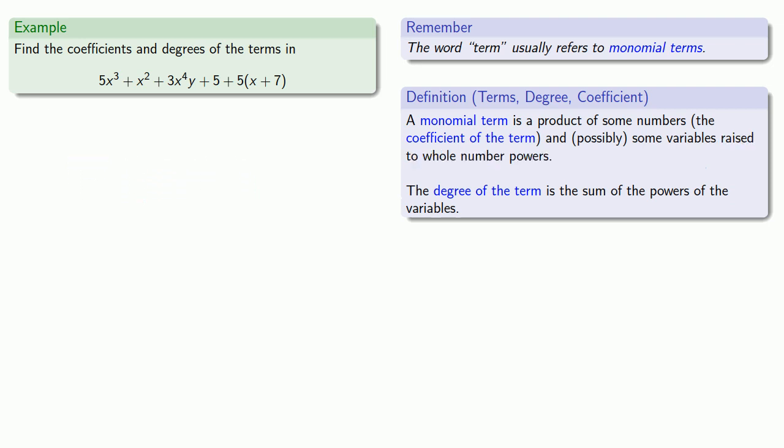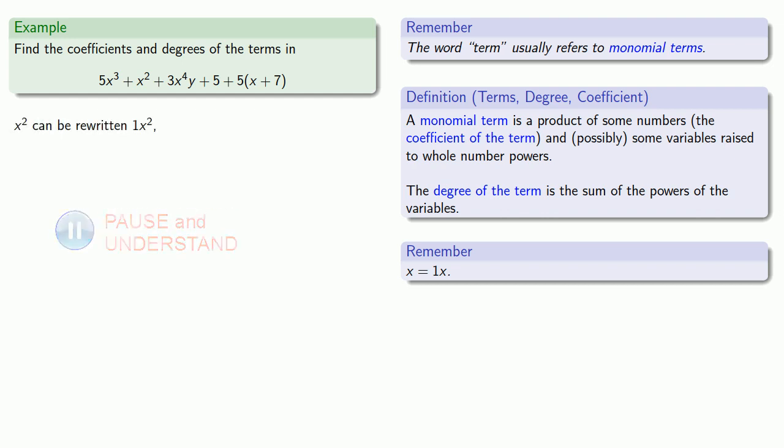What about the next thing, x to the second? Here it's helpful to remember, we can always put a factor of 1 in front of any expression. So x squared can be rewritten 1x squared. Now it's the product of a number and some variables, so it's a term. Its coefficient is 1, the number part, and its degree is 2, the power on the variable.